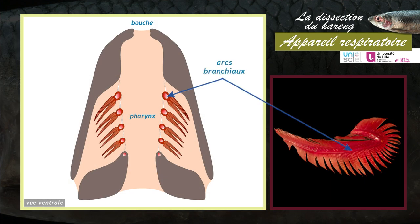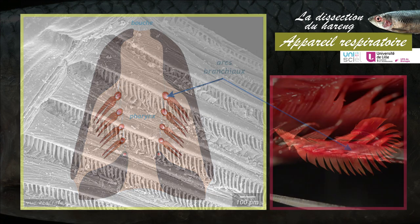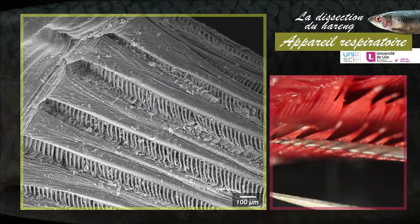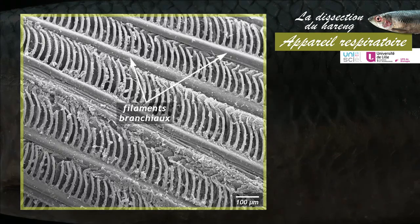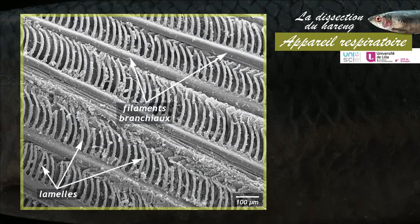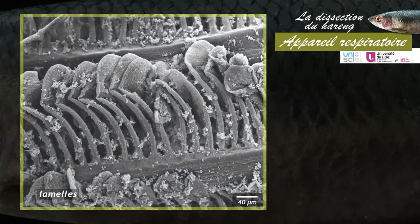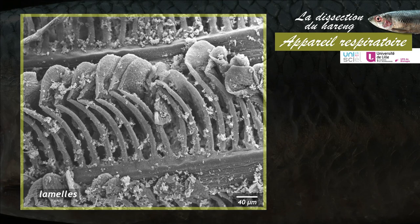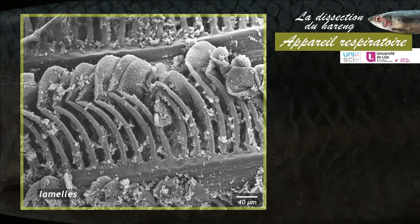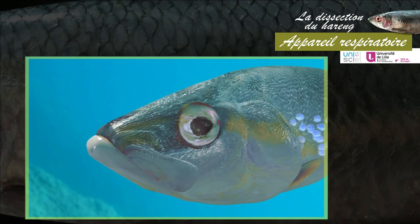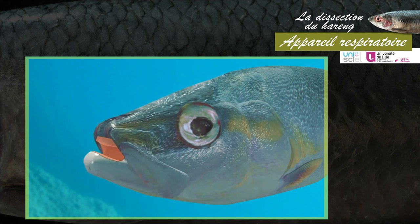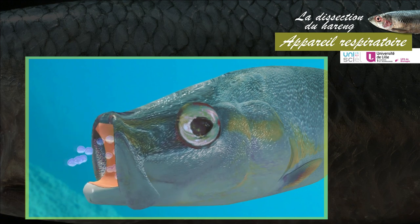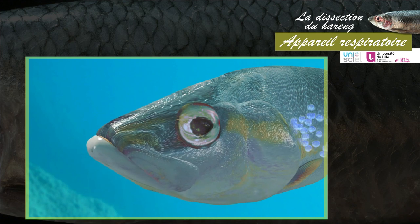Seulement les quatre premières paires d'arcs branchiaux portent des branchies. Chaque branchie est constituée de deux rangées parallèles de filaments branchiaux. Chaque filament est formé par des dizaines de fines lamelles branchiales. Cette organisation garantit aux branchies une très grande surface d'échange respiratoire. La ventilation branchiale est assurée par les mouvements alternés d'ouverture et fermeture de la bouche et des opercules : l'eau entre par la bouche et sort par les fentes operculaires.